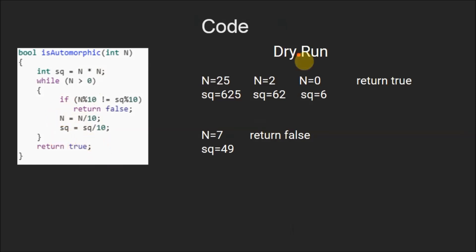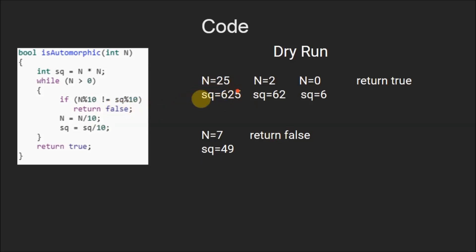Now for the dry run, we assume the value of n is 25, so the square becomes 625. Since n is greater than 0, we enter the loop. The if condition checks whether the last digit of n and the last digit of square are not equal. In this case, the last digit of n and sq are both 5, so they are equal and we do not enter the return false statement.